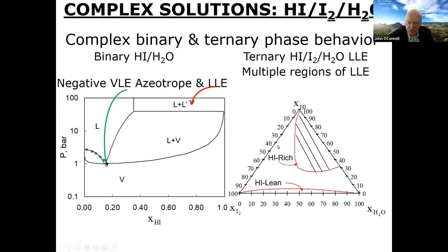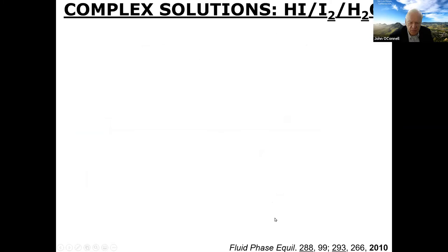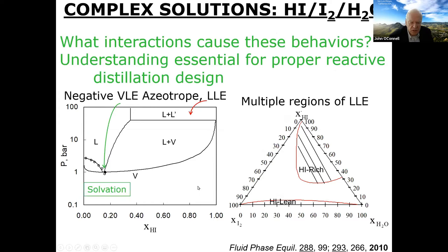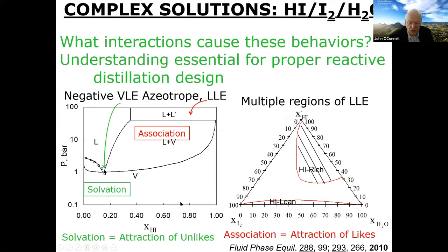In the ternary system of HI, water, and iodine, you get two different regions of liquid-liquid equilibria — one with little HI and another with lots of HI — with a single-phase region between them. To understand the interactions causing these behaviors and do proper reactive distillation design, going back to Faraday, you need to understand this. The key phenomena are solvation (attraction of unlikes) and association (attraction of likes), both appearing in the binary and ternary systems.